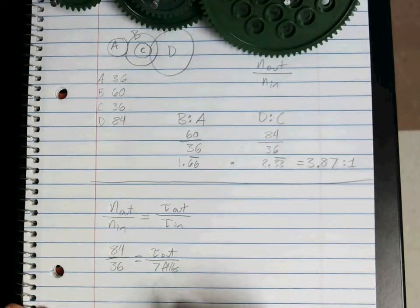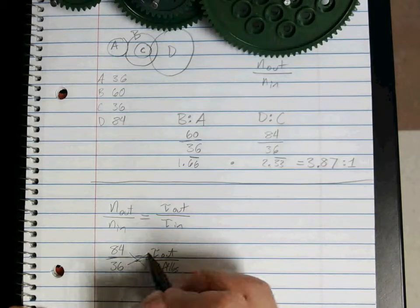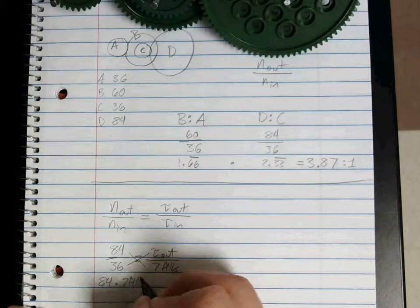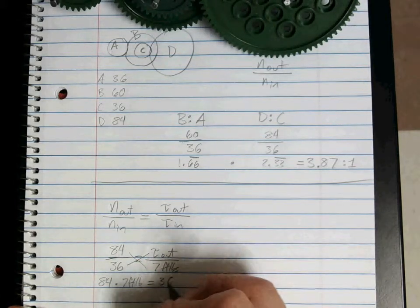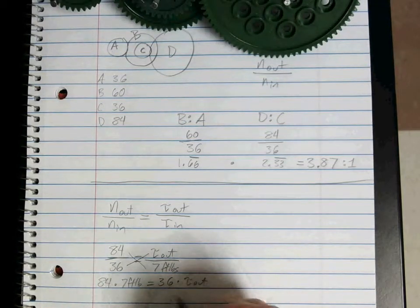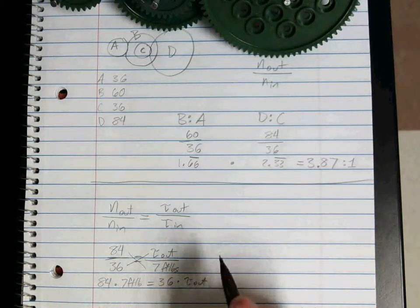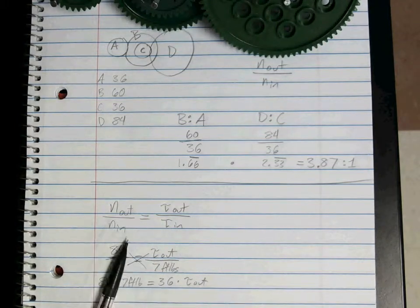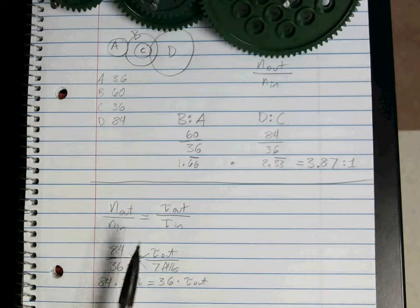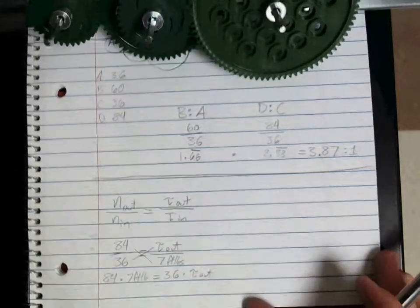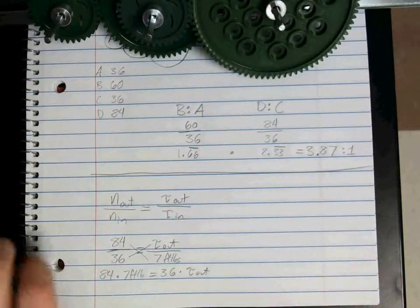Remember, you cross-multiply to solve. So 84 times 7 foot-pounds is equal to our 36 times our torque. So that should be close enough for you guys to be able to go through this. Talk a little bit about the differences between our compound one and our simple ones. Our questions do ask a little bit about that. So just make sure you take a look, go through these. If you have any questions, as always, just let me know.